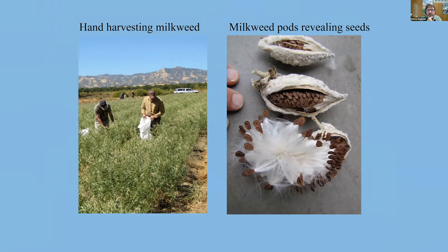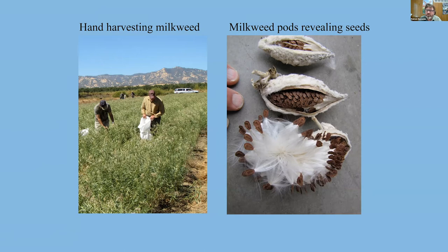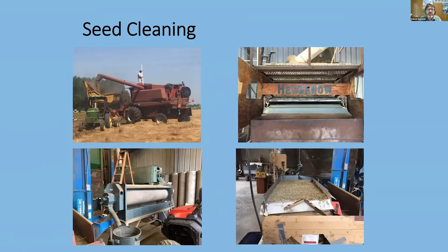A lot of seed ripens indeterminately and can't be harvested with a flailback. In those cases we harvest by hand. Milkweed is the classic example — some milkweed fields take more than a month to harvest, with people pulling pods off plants every two or three days. It's a very labor-intensive process, but that's what we need to do to maximize yields.